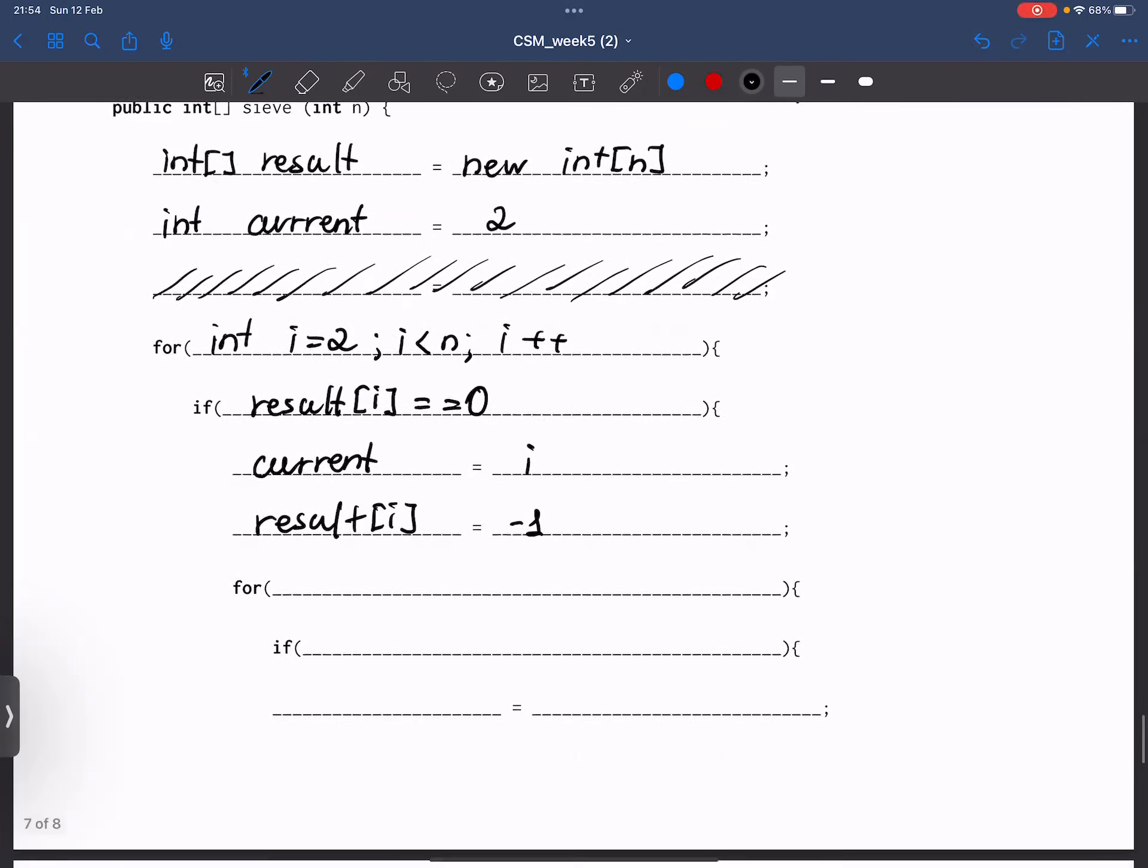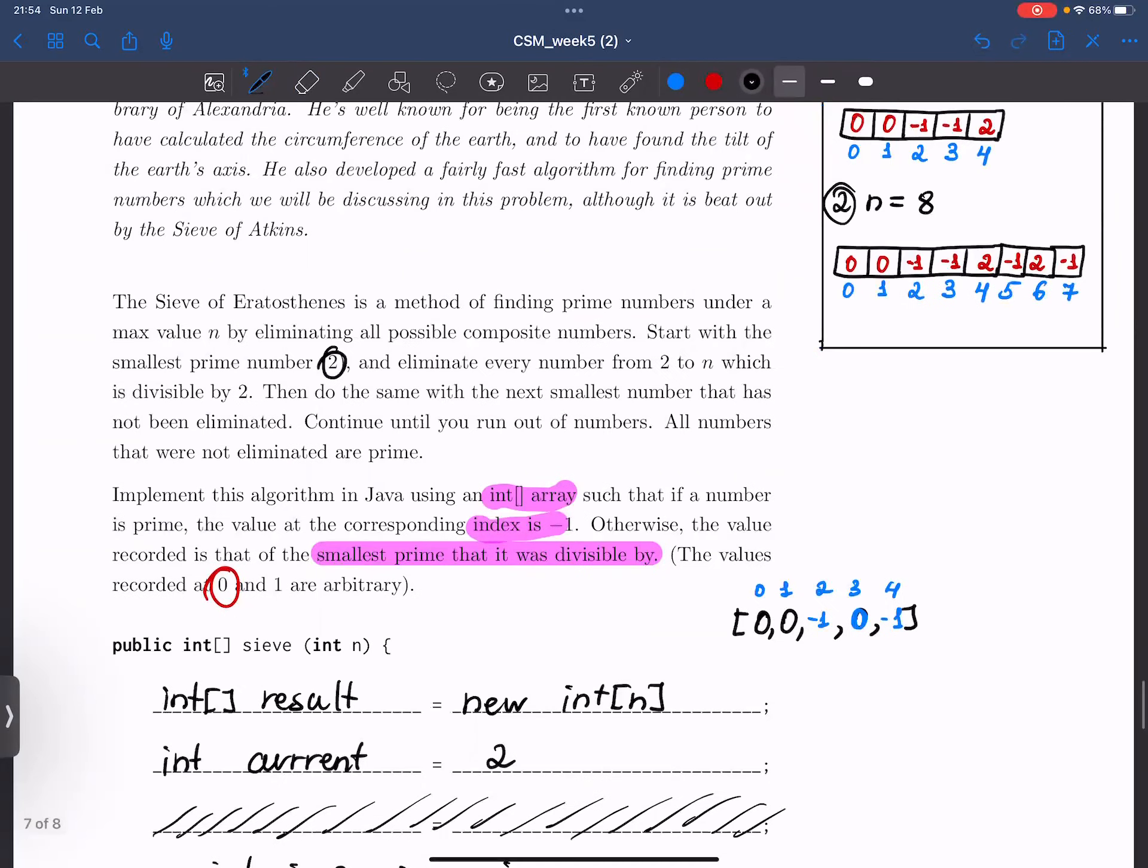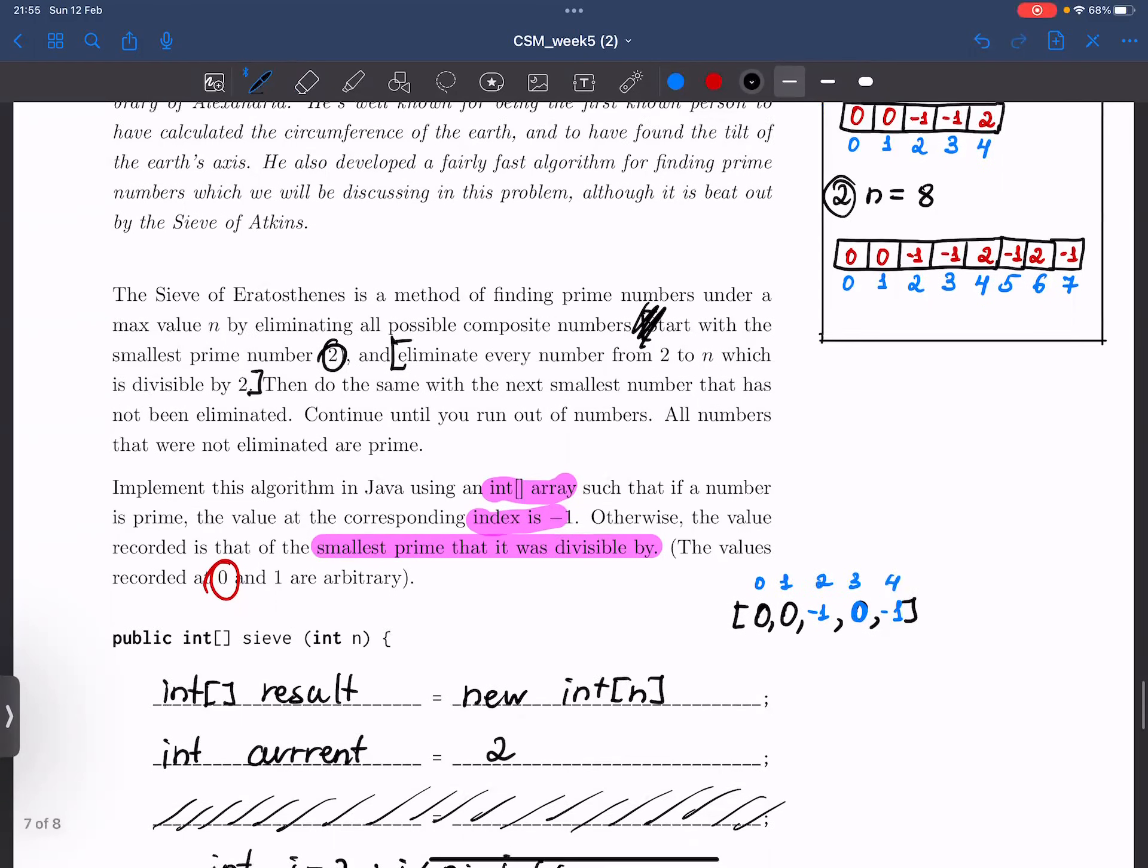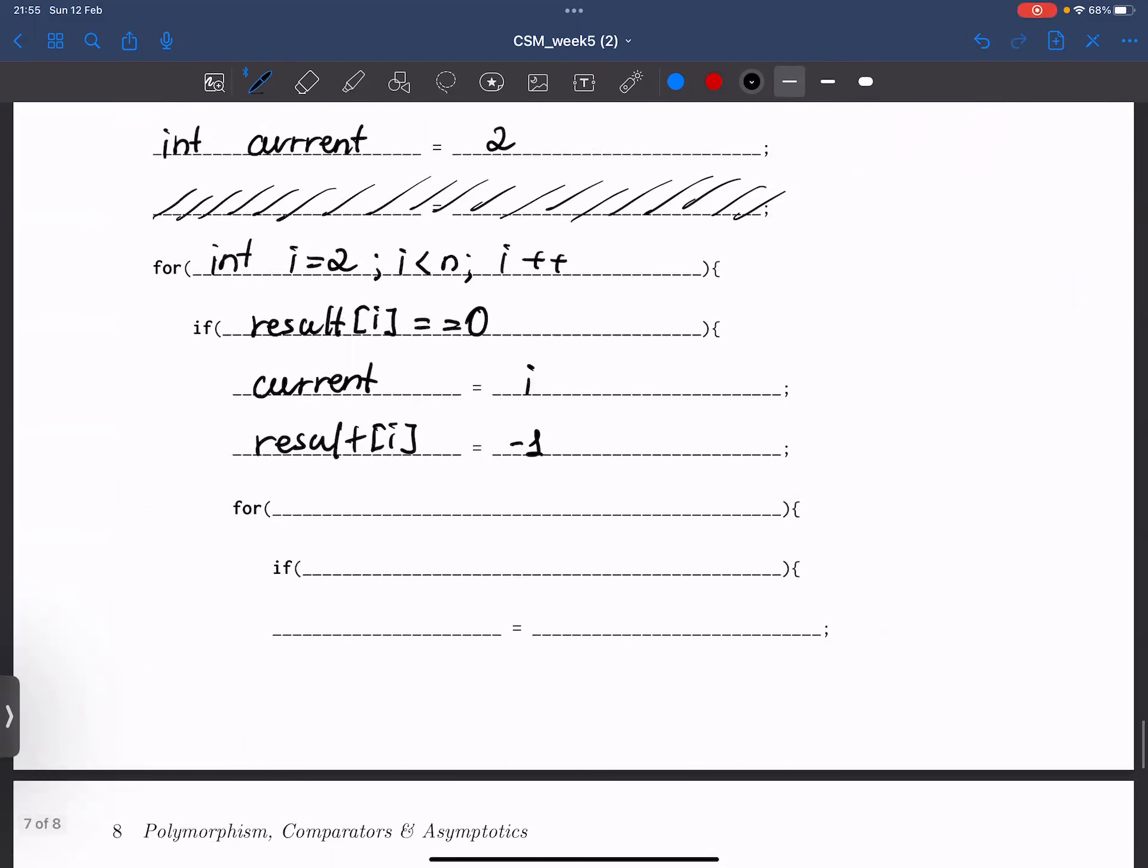The next for loop is going to be responsible for doing this. It's going to start with the smallest prime number and eliminate every number from 2 to n which is divisible by 2. And here, instead of 2, we're going to use the current number that we're on. So for integer k, starting from 2, we're going to change every number that is multiple of prime.